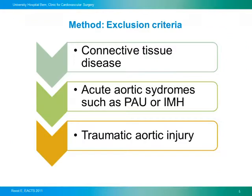From this analysis, we excluded the following patient groups: all patients with a connective tissue disease such as Marfan syndrome, patients treated for an acute aortic syndrome such as penetrating aortic ulcer or intramural hematoma, and all patients who were treated for a traumatic aortic injury.